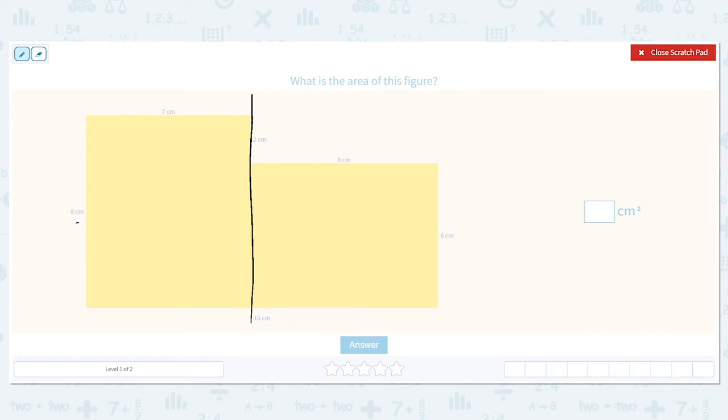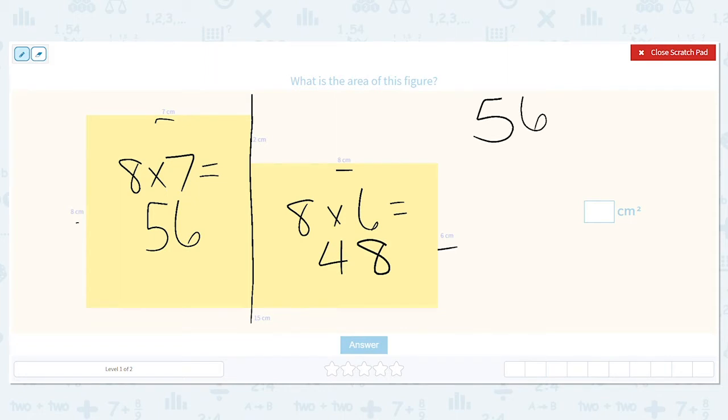So now I have an 8 by 7 rectangle and I have an 8 by 6 rectangle. Now I'm going to find the area of each. For this figure, I will do 8 times 7, which equals 56. And then on the other rectangle, I will do 8 times 6, which equals 48. So am I done? No. What do I need to do? I have two separate areas. I need to combine them. So my last step will be to add them, to put them together to find that total area.